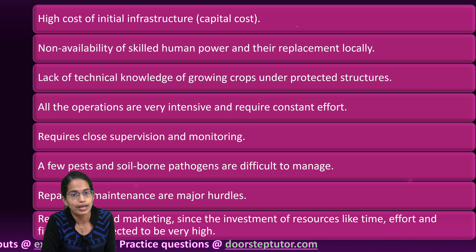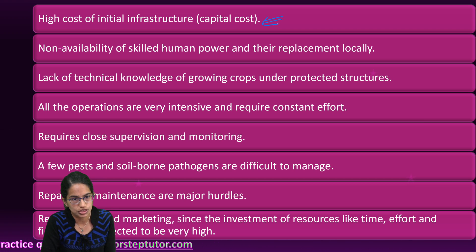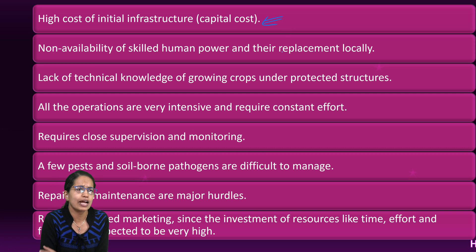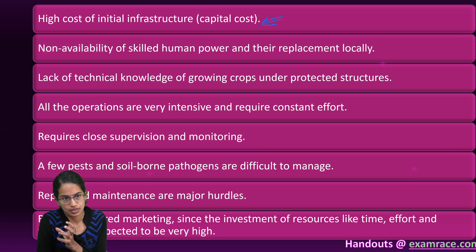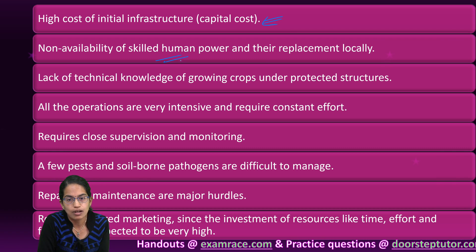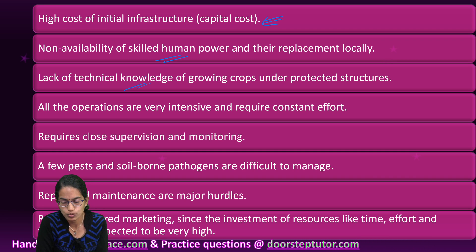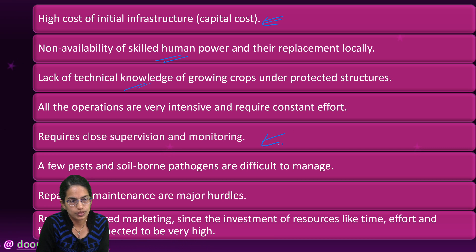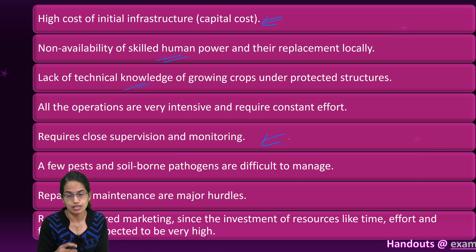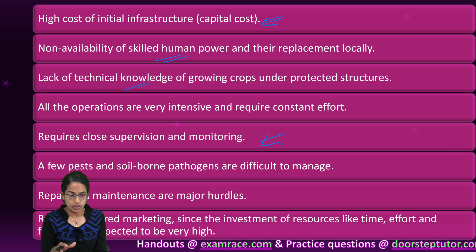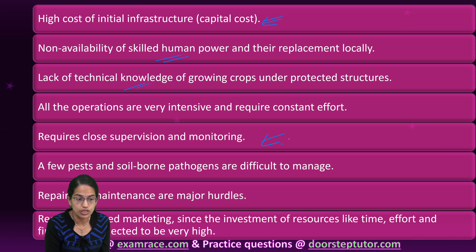The reasons are understandable — it would definitely require a huge initial cost. Most farmers in India are small and marginal farmers and do not have the high capital required. This would also require skilled manpower with technical knowledge, both of which lack in most regions of India. Definite monitoring and supervision would be required, and if any pest infests that region, it would affect the whole microclimate created.